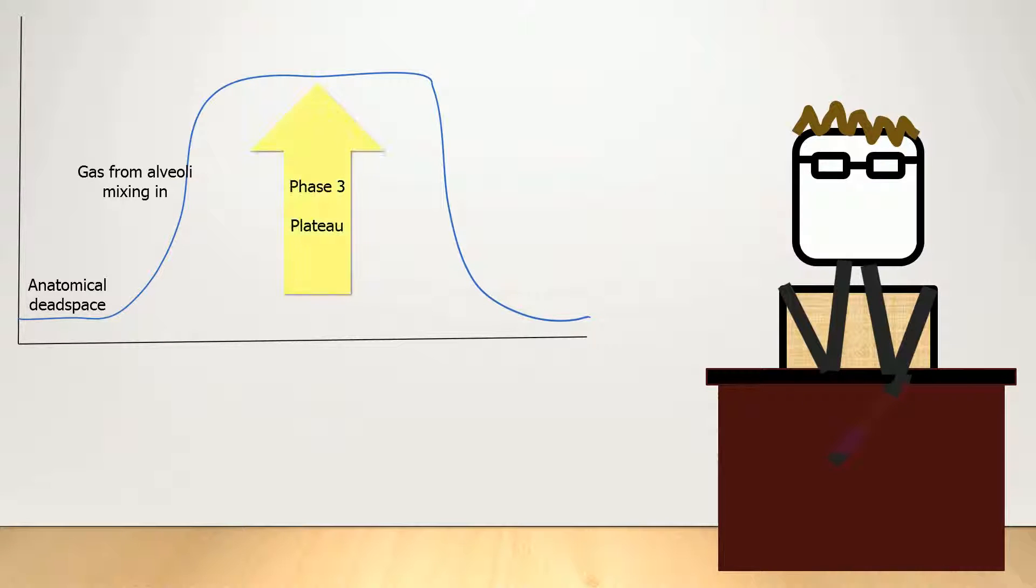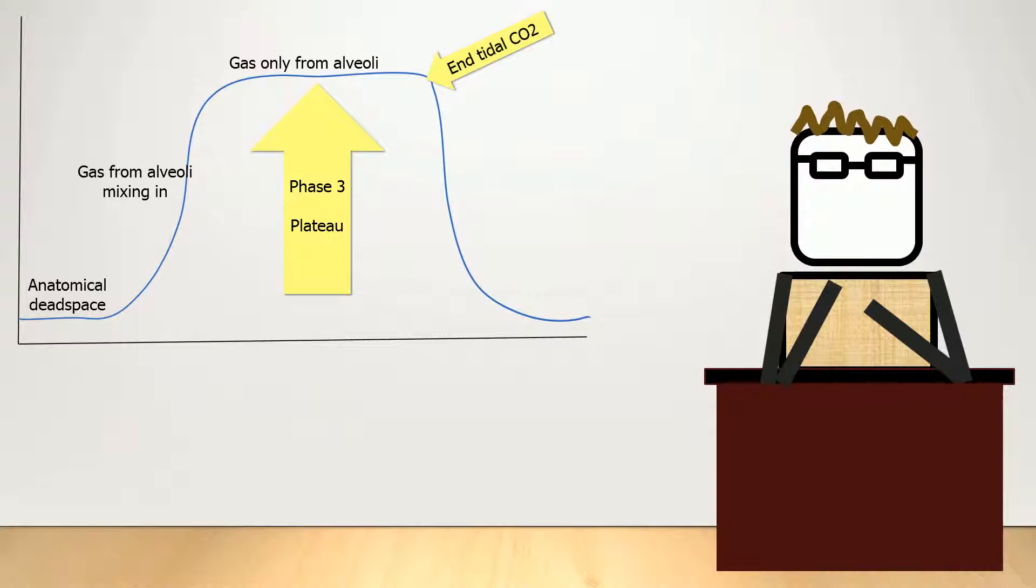Phase 3 is a plateau, where most of the breath stream contains air just from the alveoli. The end-tidal CO2 is at the end of this plateau, and is the maximum CO2 concentration in the lungs.